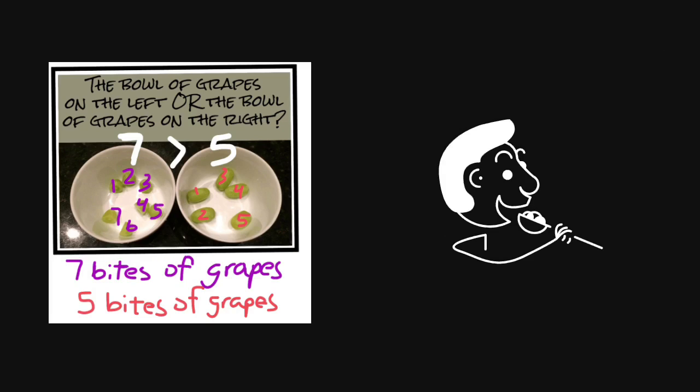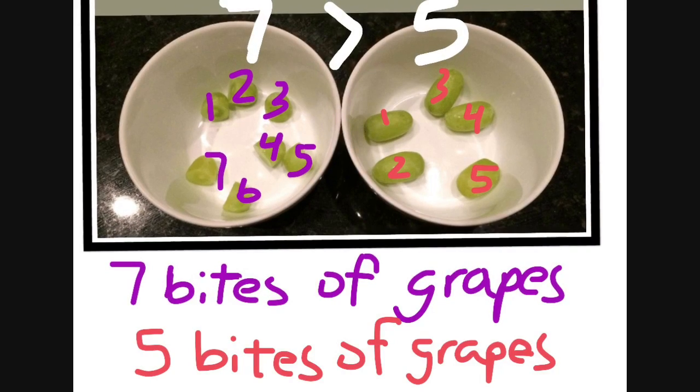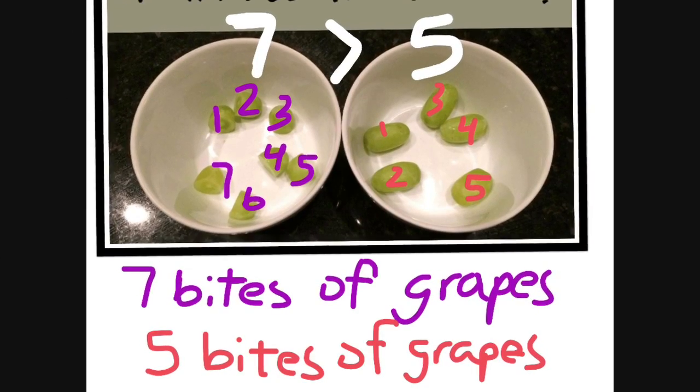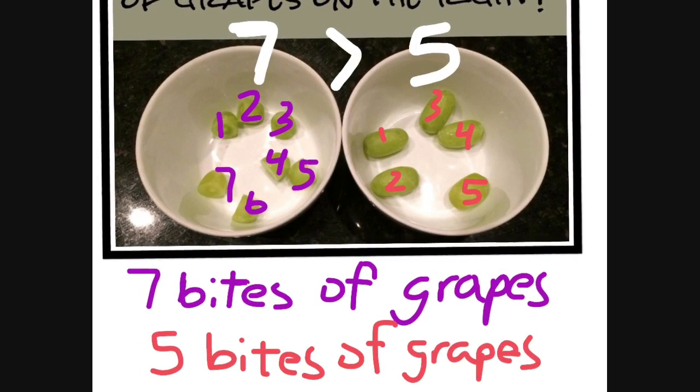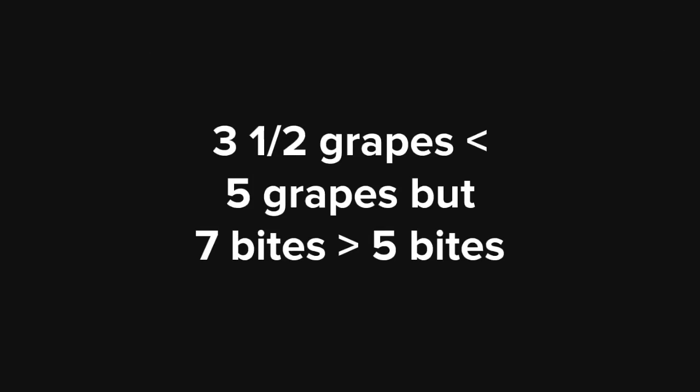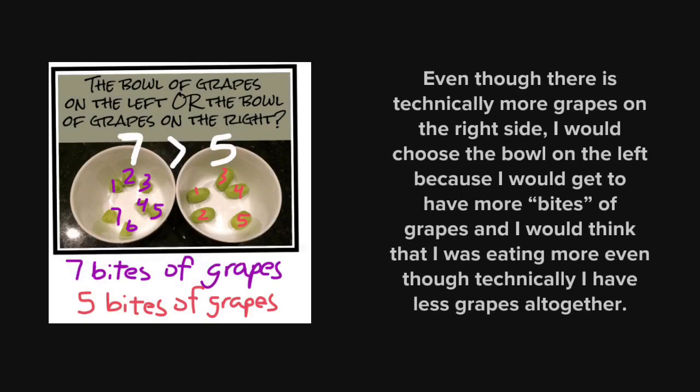But if you choose the bowl on the right, you only get five bites of grapes, and then that would be seven is greater than five. So it all depends on how you look at this. When we look at it, three and a half grapes is less than five grapes, but seven bites of grapes is greater than five bites of grapes.